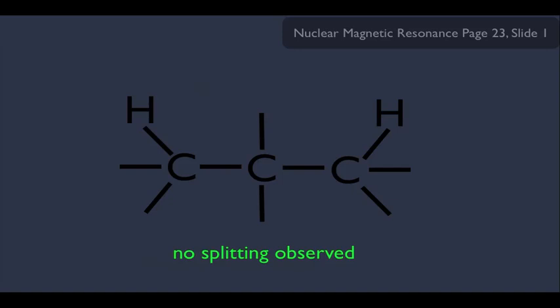So notice spin-spin splitting occurs over a kind of a short range. The effect is limited. The hydrogens have to be in a certain proximity in order for splitting to occur. And these examples show when we should apply splitting and when we should not apply splitting.